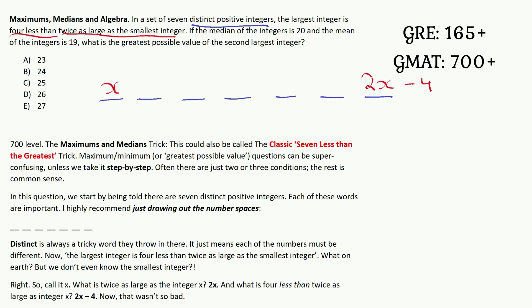If the median of the integers is 20, okay, let's stop there. What does median mean? Median means the middle number. If there are seven numbers, which one is the median? That'll be this guy in the middle. He is the number 20. Let's carry on.